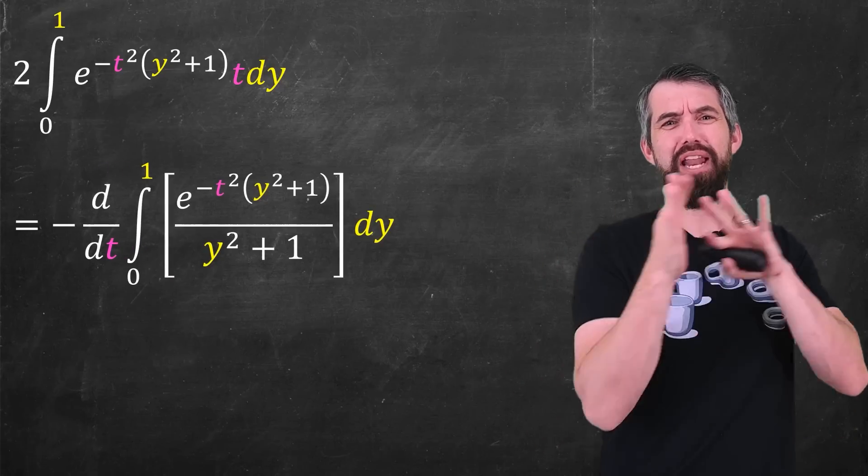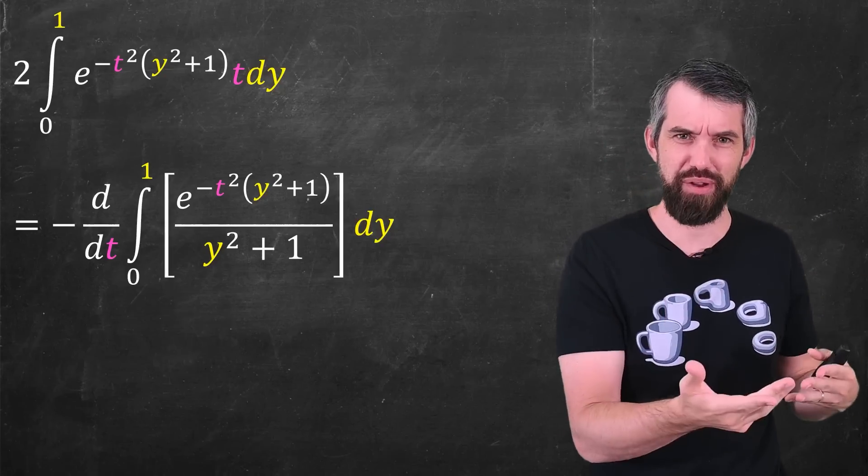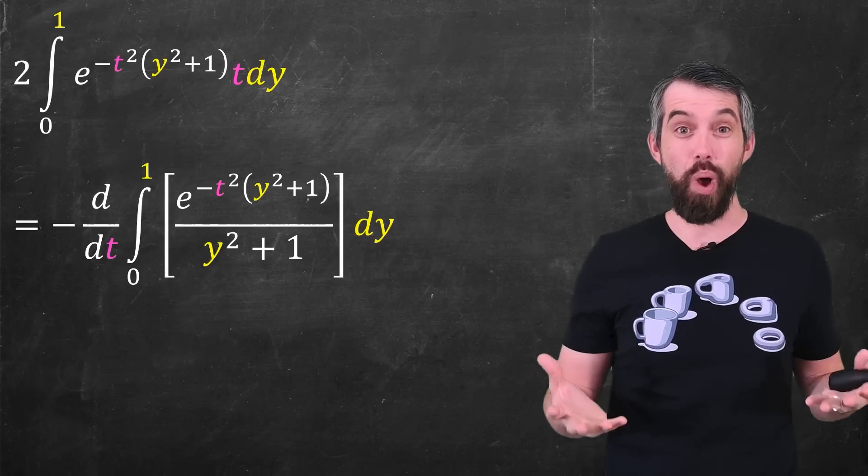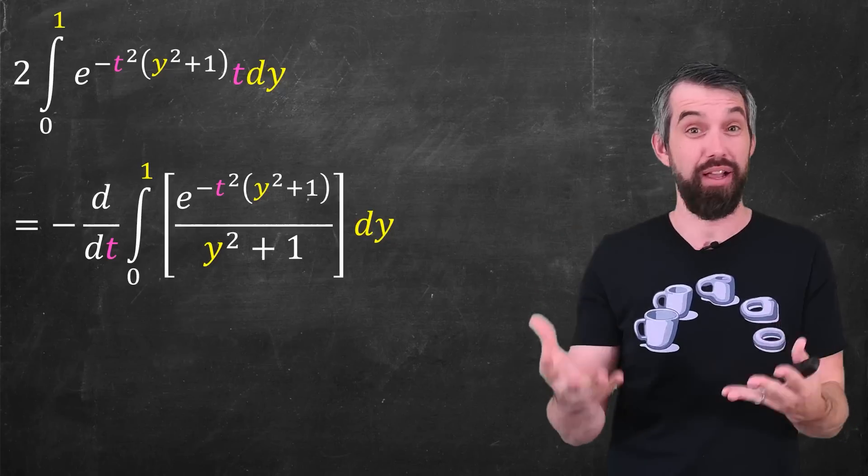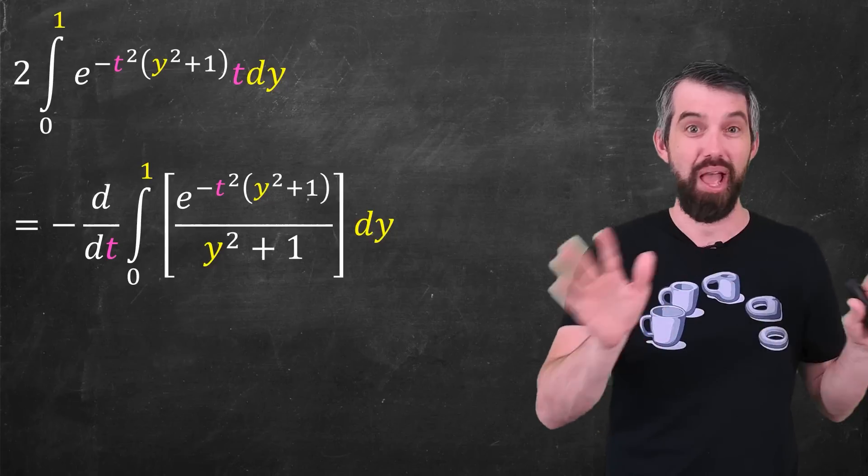Minor pedantic note. When I pull it outside of the integral, I change it from being partial derivative to a full derivative. The argument here is just that my integral was an integral with respect to y. That eliminates the y variable so everything that remains is just a function of t and I'm taking the derivative of that single variable function of t.